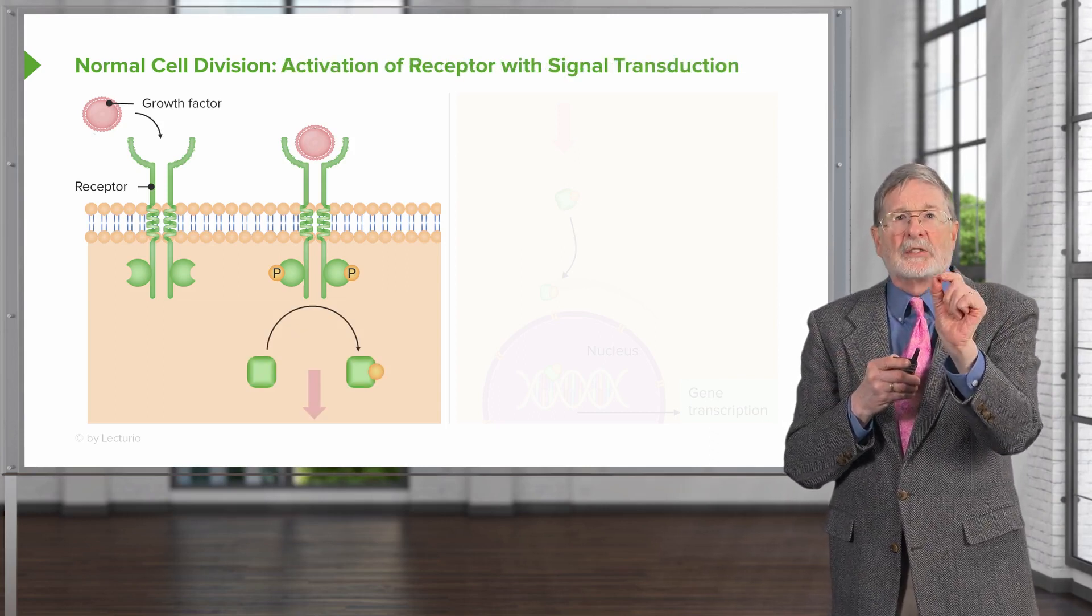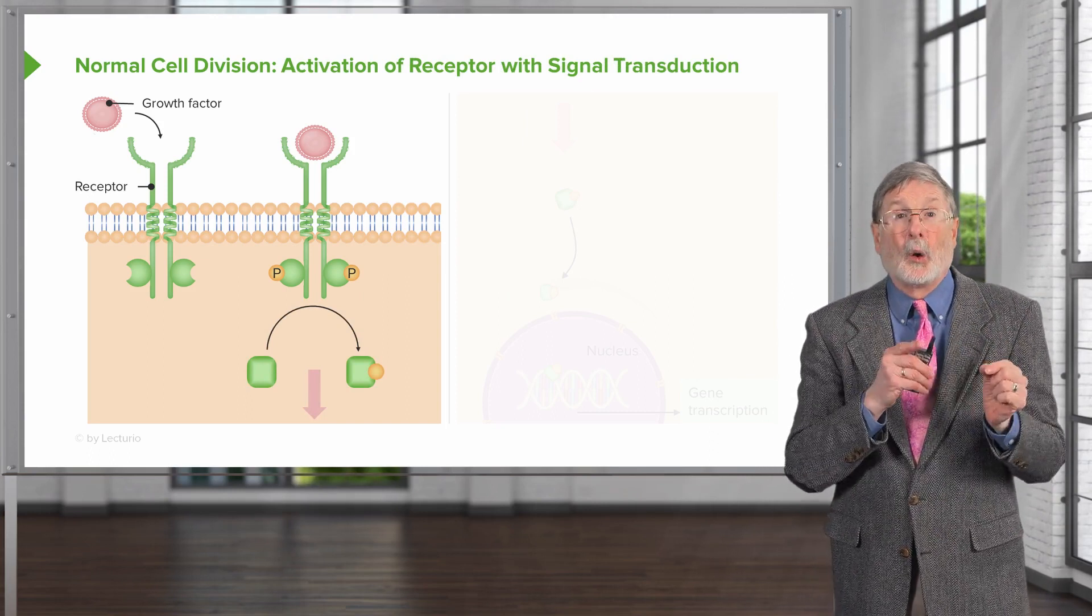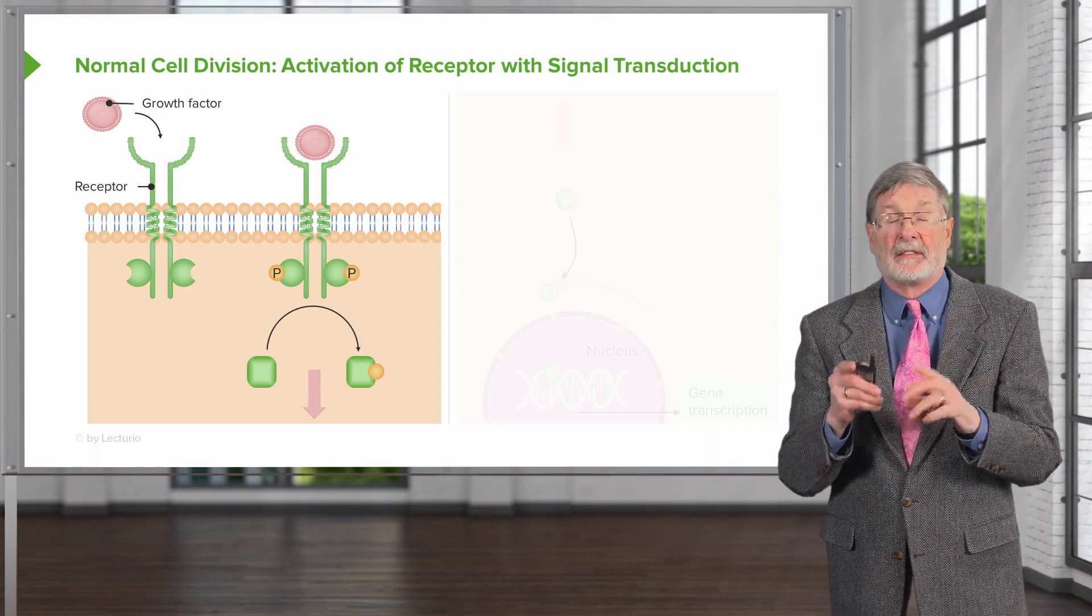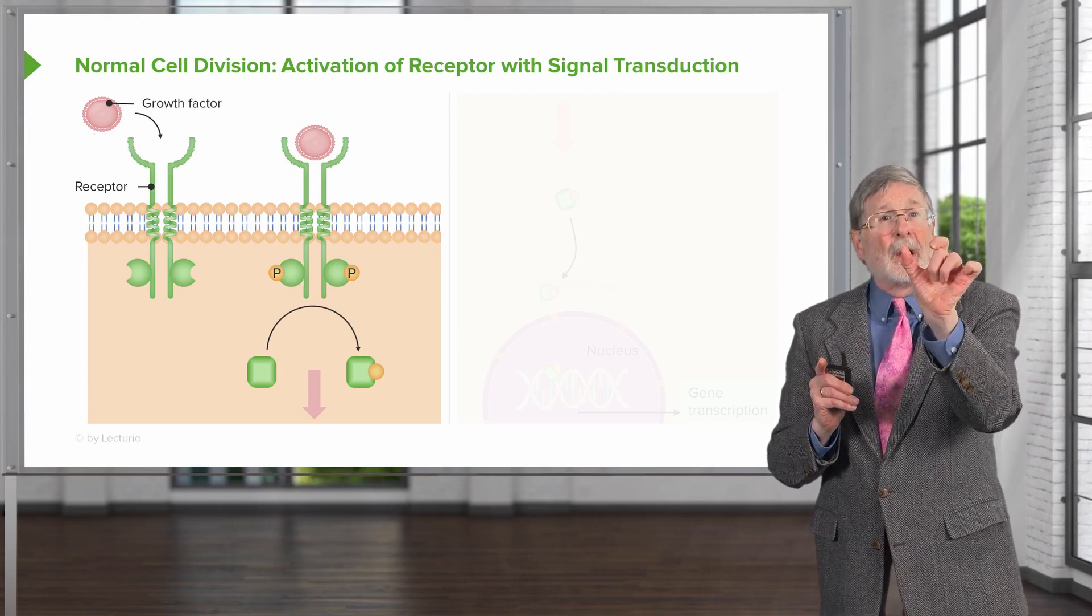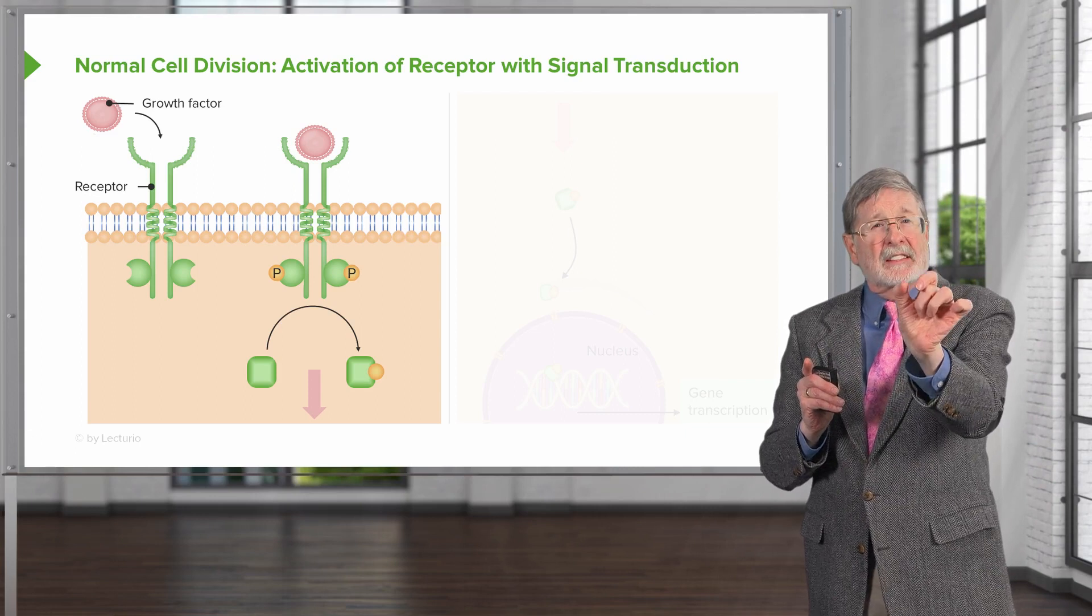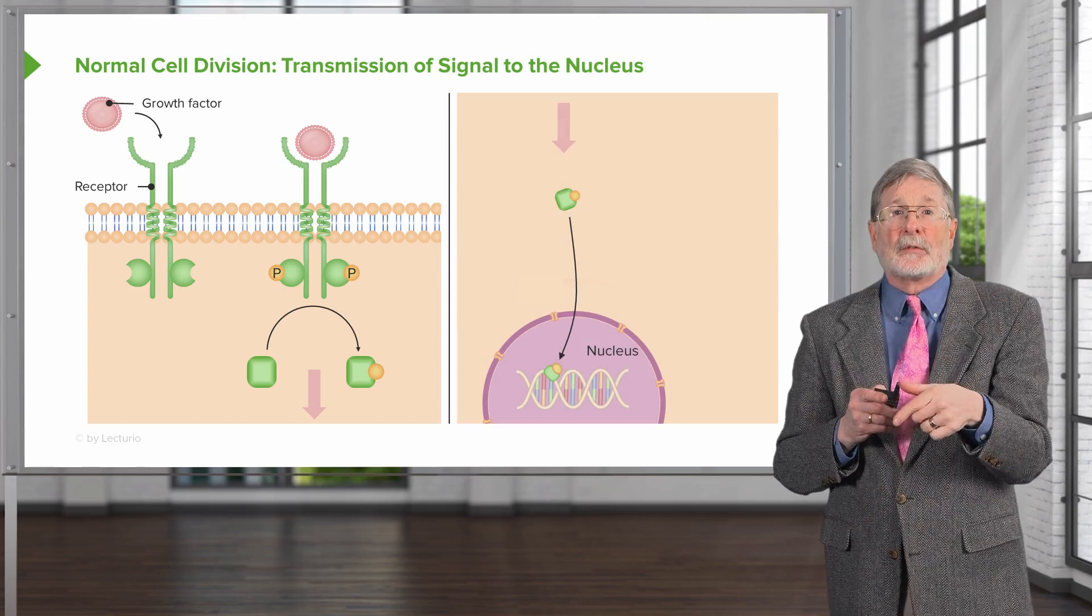And that active kinase will now phosphorylate a whole bunch of other proteins. And I'm specifically not going into the details, because it's a little bit different for every cell type and every cancer. So basically, you have growth factor that normally activates the receptors, and then that will phosphorylate additional proteins, and in a cascade of phosphorylation.